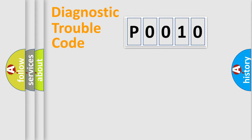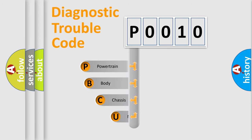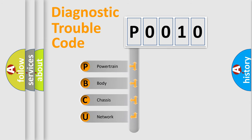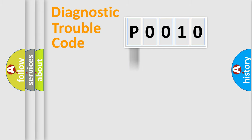Let's do this. First, let's look at the history of diagnostic fault code composition according to the OBD2 protocol, which is unified for all automakers since 2000. We divide the electric system of an automobile into four basic units: Powertrain, Body, Chassis, and Network.